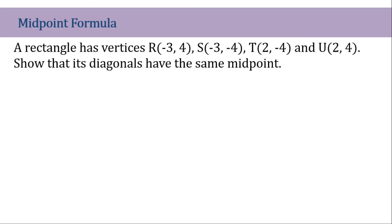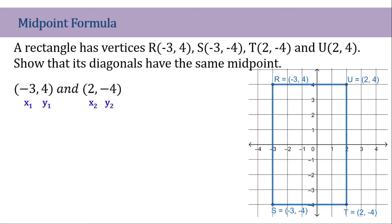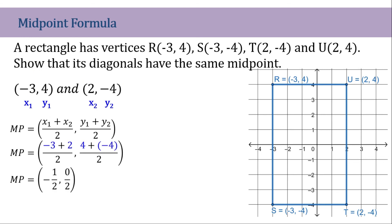Let's go to our final problem for this tutorial. A rectangle has vertices at (negative 3, 4), (negative 3, negative 4), (2, negative 4), and (2, 4). Show that its diagonals have the same midpoint. The diagonals connect the opposite points, and we will prove that they share the same midpoint. Let's find the midpoint of segment RT: that is (negative 3, 4) and (2, negative 4). Let's assign point 1 and point 2, substitute the given, and simplify — giving us the midpoint of (negative 1/2, 0).